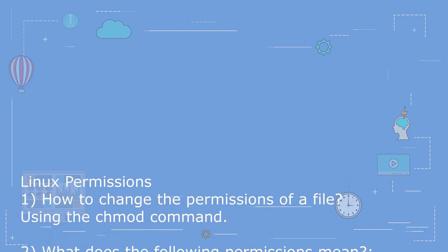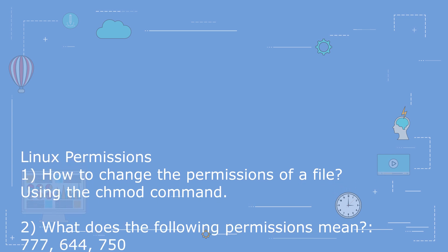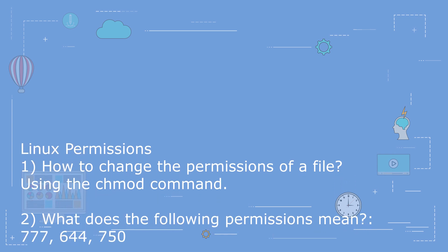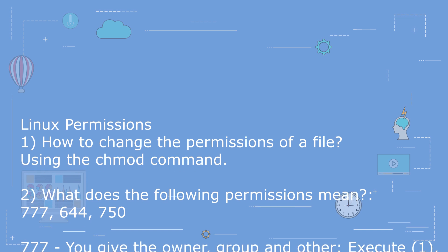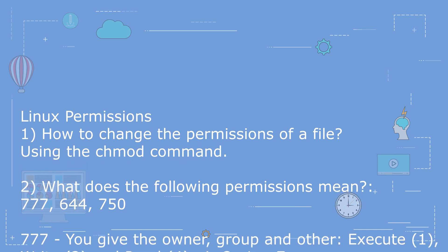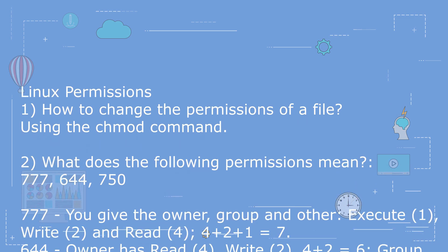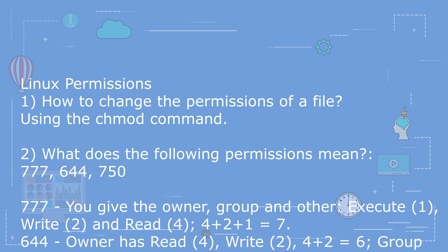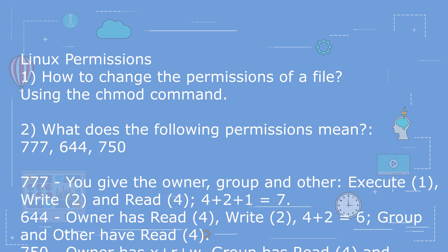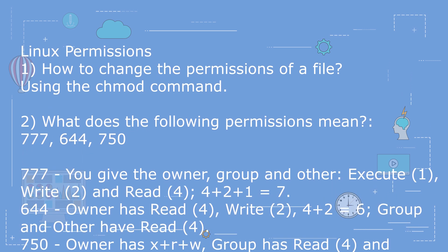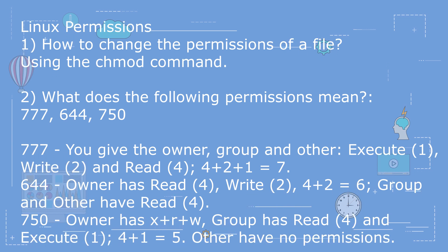Question 2: What do the following permissions mean — 777, 644, 750? For 777, you give the owner, group, and others full permission. Execute represents 1, write represents 2, and read represents 4, so rwx gives 7.